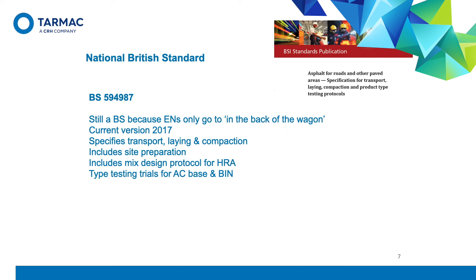We are still allowed a British standard for this because the European standards only cover the production of asphalt and not the installation. BS 594987 also gives guidance on the application of bond coats, which improves the adhesion between layers of asphalt. It's fully aligned with PD 6691 mixtures, making it an easy way to set requirements for installed properties like thickness and regularity. Work may soon start on a revision of 594987 for it to cover warm mix asphalt and the laying of mastic.